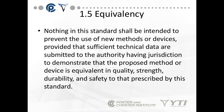Section 1.5 is labeled Equivalency. Nothing in this standard shall be intended to prevent the use of new methods or devices, provided that sufficient technical data are submitted to the authority having jurisdiction to demonstrate that the proposed method or device is equivalent in quality, strength, durability, and safety. In other words, if a new procedure or new standard comes out by a manufacturer, as long as it is identical or better and you have submitted that information to the authority having jurisdiction, you can use the new standard.